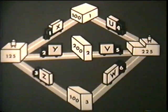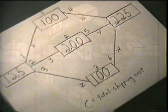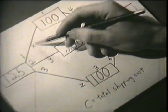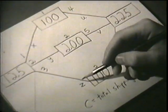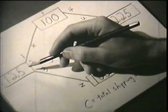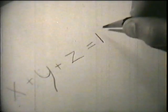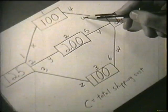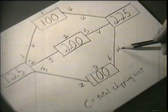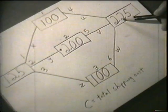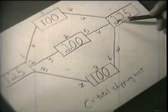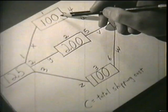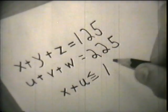Now, we can write some equations and inequalities. I'll give them to you when you write them down. Okay. Next, X plus Y plus Z equals 125. That's because 125 tons in all are going to the first factory. U plus V plus W equals 225 because that's how much is going to the second factory. And we know that X plus U must be less than or equal to 100 because there are only 100 tons in this warehouse.